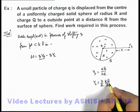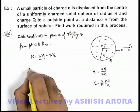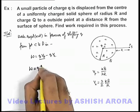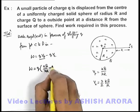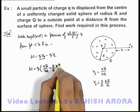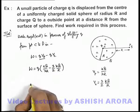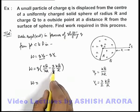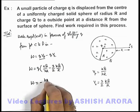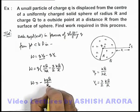Now we substitute the values. Work can be written as q times (kQ/2R minus 3kQ/2R). After calculation we get 1/2 minus 3/2 which is minus 1, so the work is minus kqQ/R. That'll be the answer to this problem.